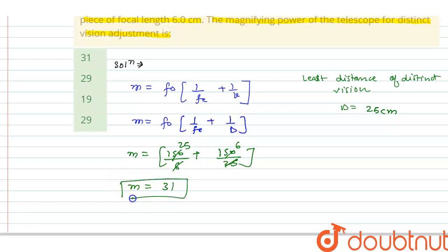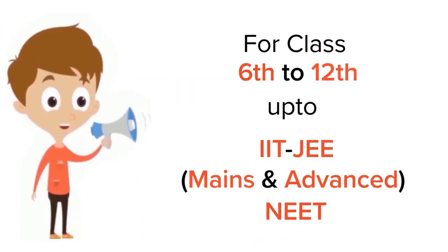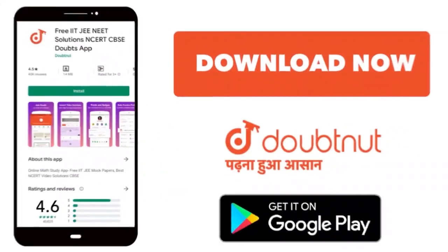to 31, which is our answer. So, if we see the option, option first is our correct option. For Class 6-12, IIT and NEET level. Trusted by more than 5 crore students. Download Doubtnit app today.